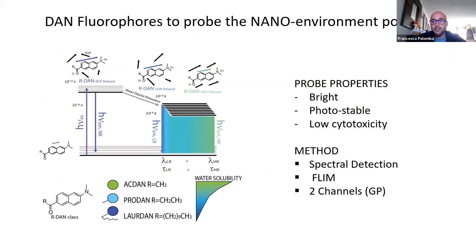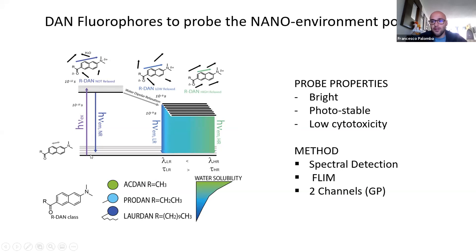For this reason, we are developing this approach that uses solvatochromic dyes — acdan, prodan, and laurdan. These dyes are very famous because they were developed from the fantastic pioneering studies and investigations of Gregory Weber.